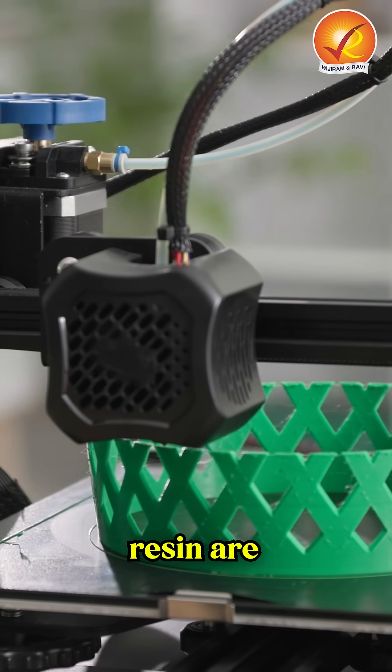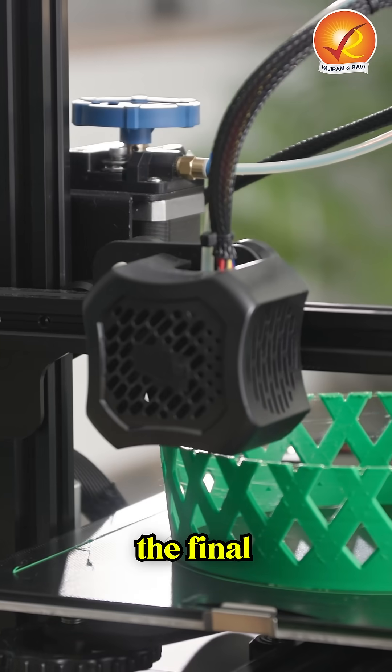Materials like plastic, metal, or resin are deposited one layer at a time to form the final object.